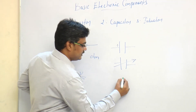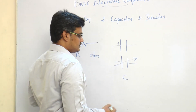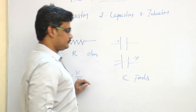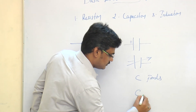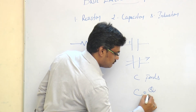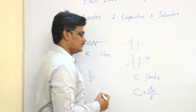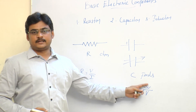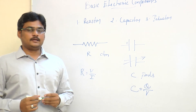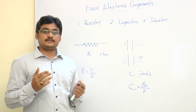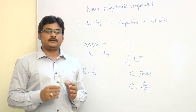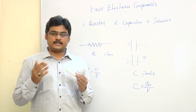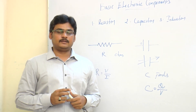The capacitor is denoted by C, whose unit is Farads. The capacitance can be expressed as Q divided by V, so the capacitor directly depends on the electric charge. The capacitor can change current instantly, but it takes some time to change the voltage.